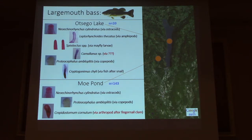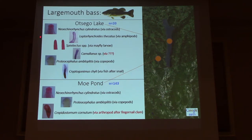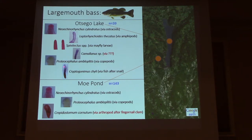We can make inferences about invertebrates from looking at parasites — for example in largemouth bass, comparing Otsego Lake and Moe Pond. Over the years we've examined about 20 bass from the lake, roughly two per year. We have a couple species of acanthocephalins that bass acquire from eating crustaceans — ostracods and amphipods — a couple species of Spinitectus nematodes acquired from mayfly larvae, another nematode, a tapeworm, and a trematode.